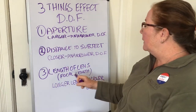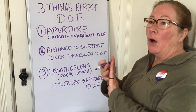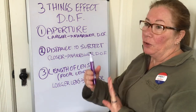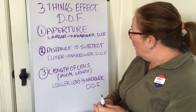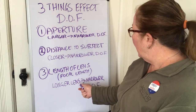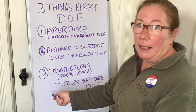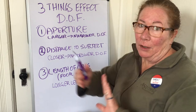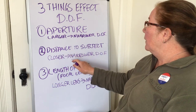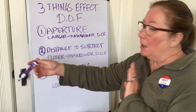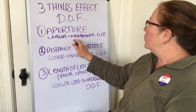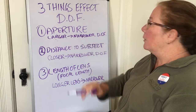Finally, the focal length of the lens — the longer the lens, the narrower the depth of field. A short lens, like a wide-angle lens similar to what you have on your cell phone or a point-and-shoot, gives you a wider depth of field. The further away you are from your subject, the wider the depth of field. Smaller aperture means larger depth of field; larger aperture means narrow depth of field.